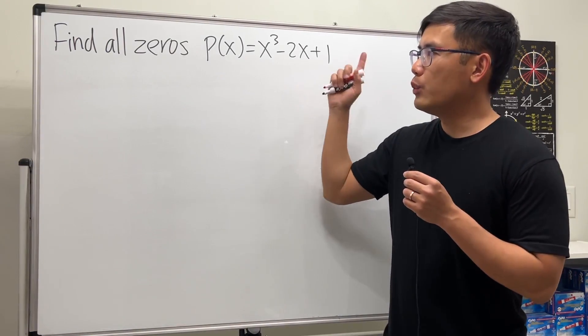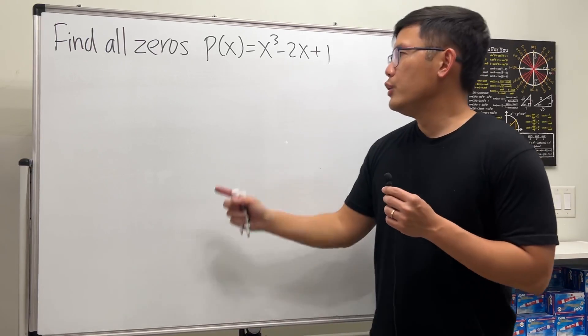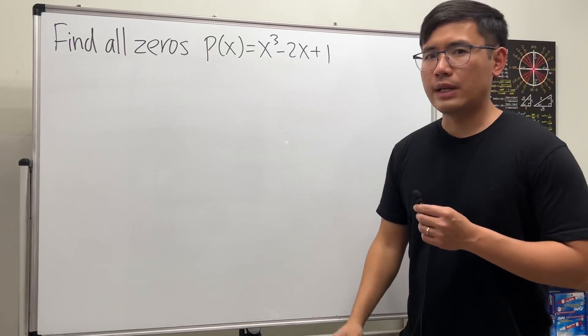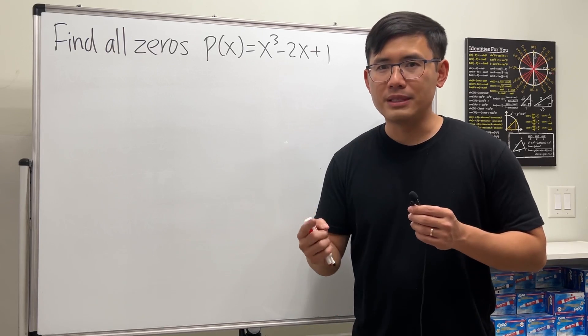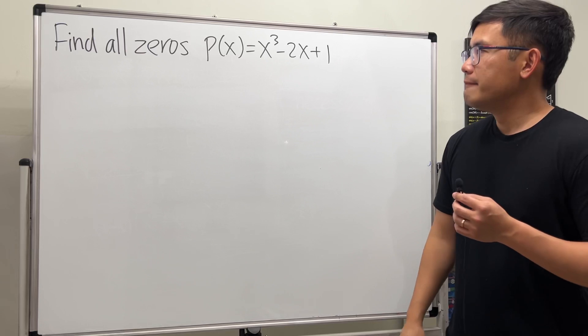Here we are given this polynomial and we are going to find all the zeros. If you have a graphing calculator you can make a quick graph of it and you will see that we have three real zeros, but one of them is actually an integer, the other two irrational numbers.